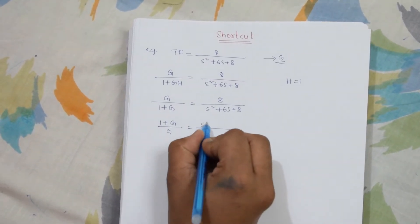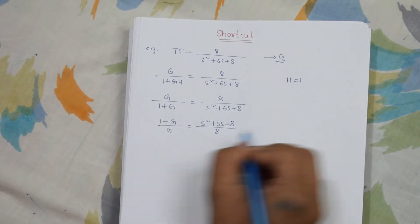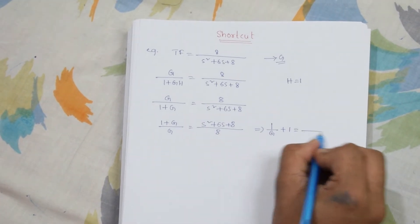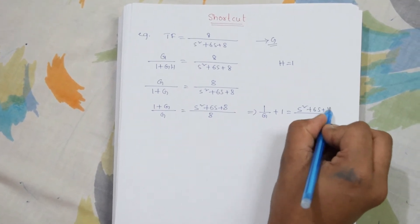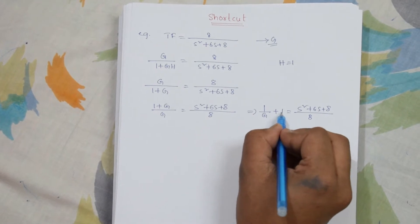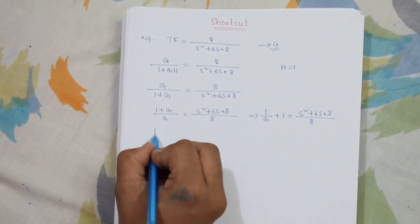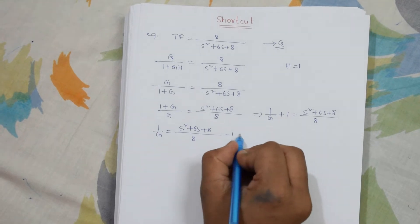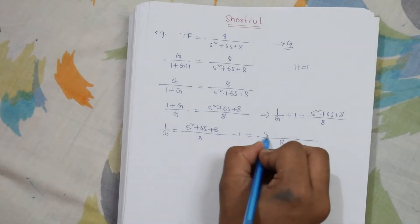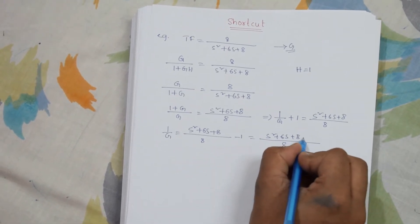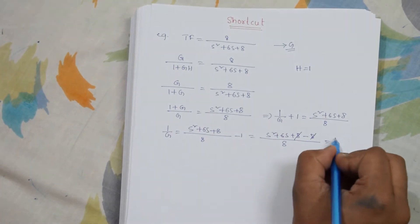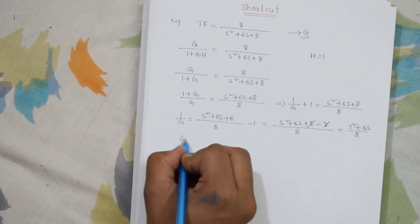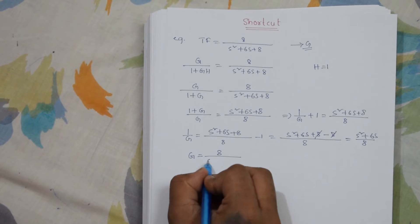We can write it as: 1 by G plus 1 equals s squared plus 6s plus 8 by 8. Taking that 1 to the other side, 1 by G equals s squared plus 6s plus 8 by 8 minus 1, which gives s squared plus 6s plus 8 minus 8, so the 8s cancel. The result is s squared plus 6s by 8, so the open loop transfer function G equals 8 by s squared plus 6s.